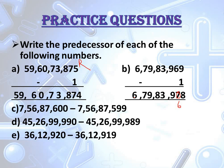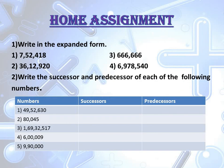Now we will look at our home assignment. Homework is important to check how much you have understood. I have written two questions: first, write in expanded form for the given numbers; second, write the successor and predecessor for all the given numbers. If you can write directly, that is great. If not, do minus 1 for predecessor and plus 1 for successor.